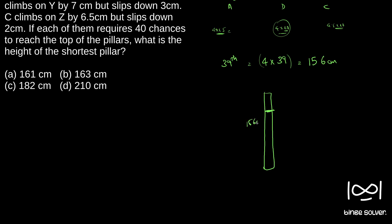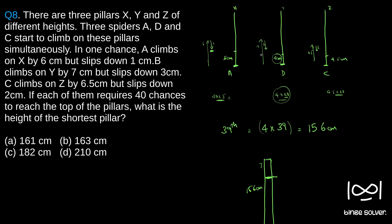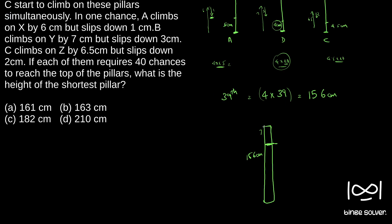I'll just draw the pillar and say the spider has reached this point. This is 156 centimeter. And now, if we assume the top is 7 centimeter - since it jumps 7 centimeter up and 3 centimeter down - if the top is 7 centimeter away from this point which is 156 centimeter, it will just in its first jump reach here.